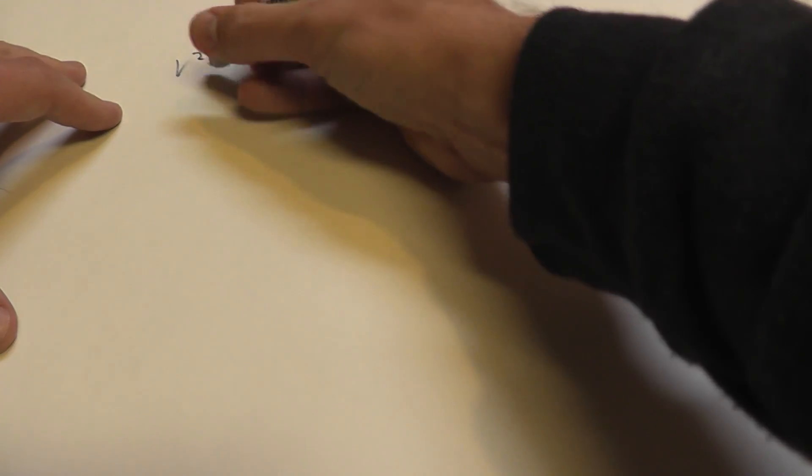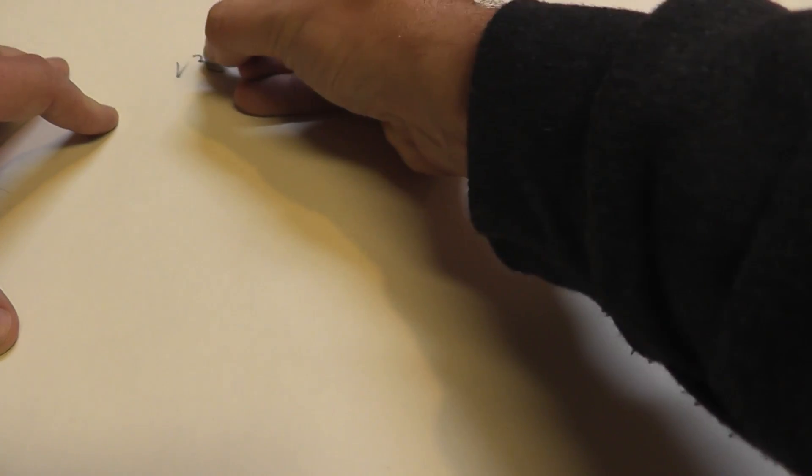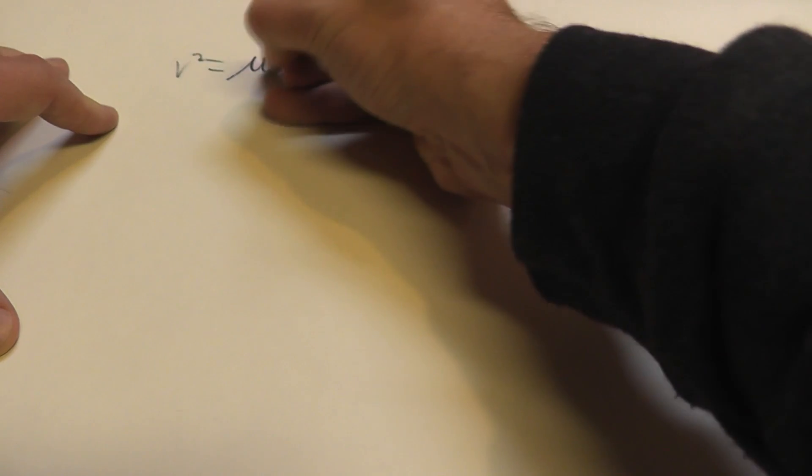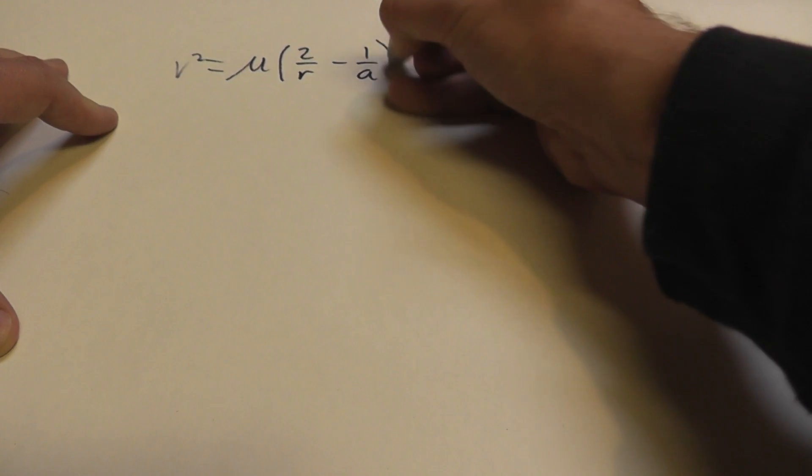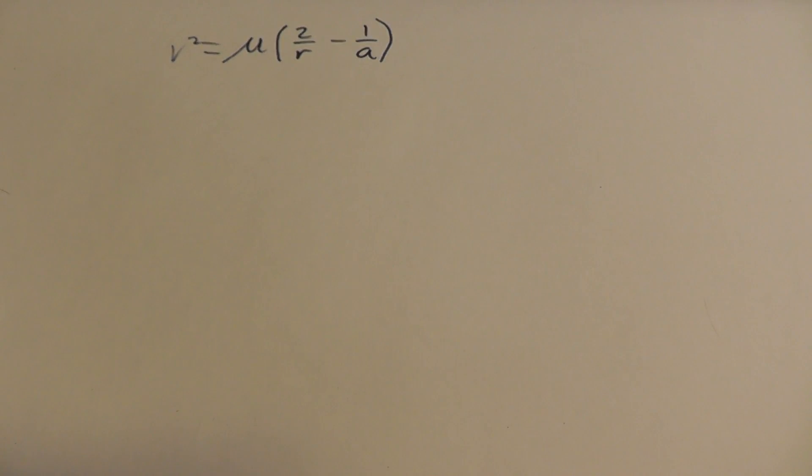Last week, or yesterday, we started with this equation that said v squared is equal to mu times 2 over r minus 1 over a. That was a really powerful equation, if you remember.